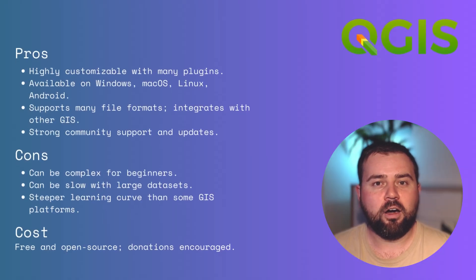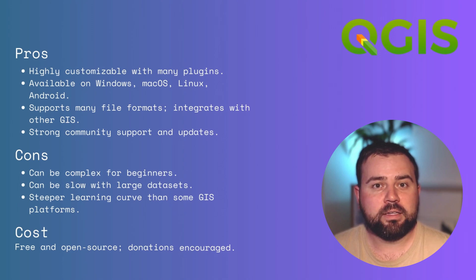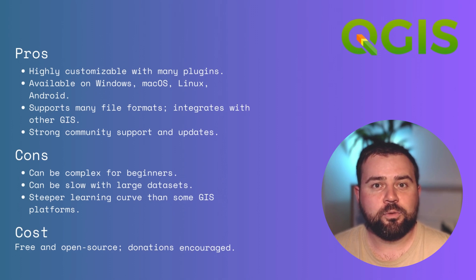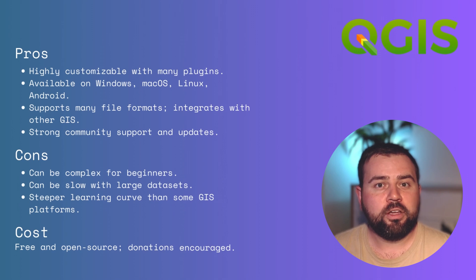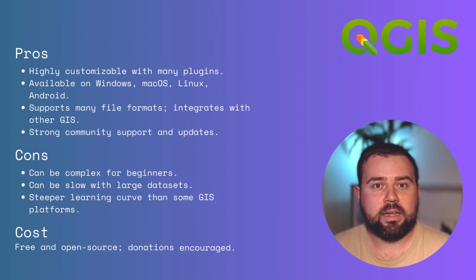The pros of QGIS include it being highly customizable, with a plethora of plugins and extensions. It's cross-platform, available for Windows, Mac OS, Linux, and even Android. It supports numerous file formats, and integrates with other GIS software. And it has strong community support and regular updates, thanks to its open-source nature. The cons of QGIS include that it might appear complex for beginners due to its extensive features. Rendering large datasets can sometimes be time-consuming, and while documentation exists, the learning curve might be steeper compared to more commercial GIS platforms. QGIS is entirely free, being open-source. Users can download, modify, and distribute it without any associated costs.